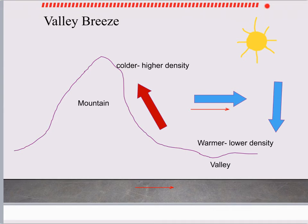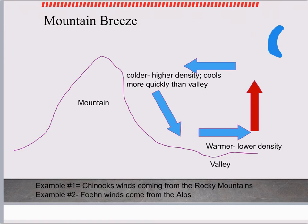Valley breezes again occur during the daytime. This thinner air warms really quickly, especially when the slope is facing the sun. That causes the warm air to rise up, come over, sink down, and then the warmer air rises again. A mountain breeze comes from the mountain and occurs at nighttime. The air up high cools rapidly, gains higher density, sinks down into the valley, and the valley causes the air to warm up, rise, and finish the convection cell.